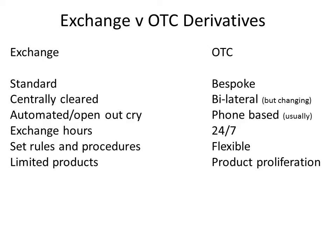In the over-the-counter market, there is certainly more scope for flexibility when it comes to the design of contracts and also creativity when it comes to trading and hedging. To summarise: exchanges tend to offer standard products that are definitely centrally cleared, providing contract fulfilment with respect to clearing members. The markets themselves can be either face-to-face open outcry or electronic, with fairly strict trading hours and strict rules, but a limited number of products available.